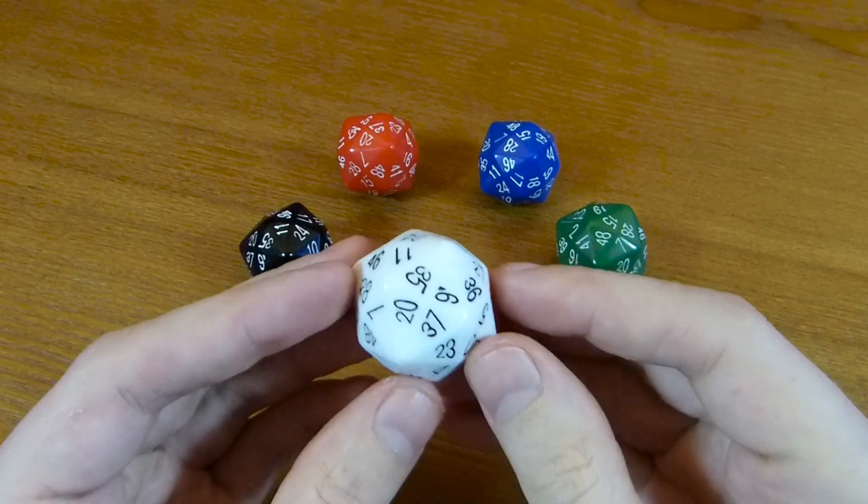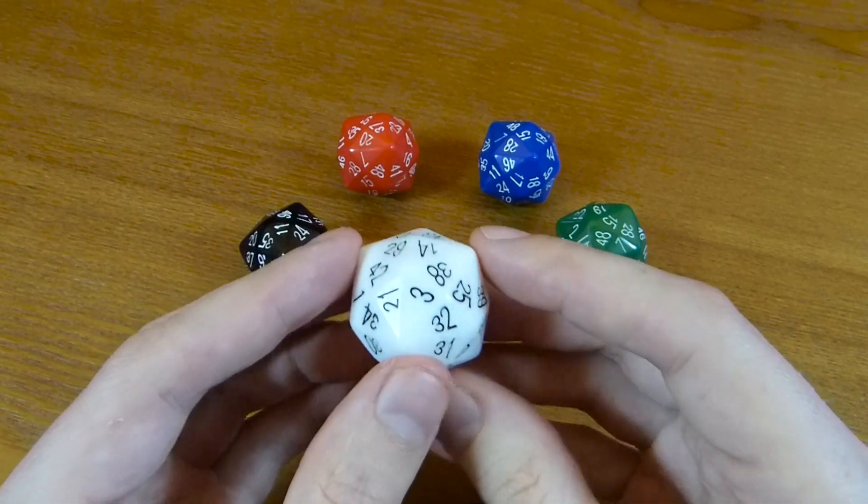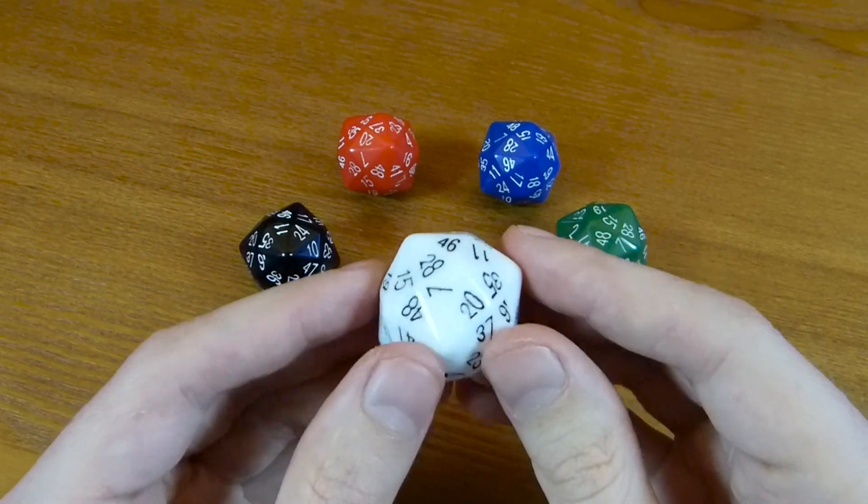The Dice Lab is myself and Robert Fathauer, and as of the D120, we were joined by Bob Bosch, who's a mathematician at Oberlin College, and he worked out the numbering scheme for us.